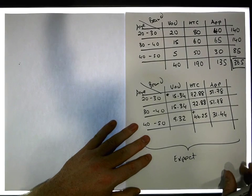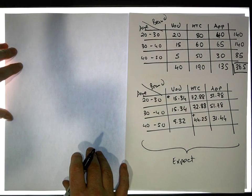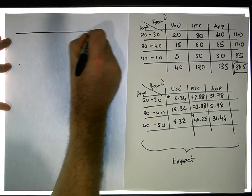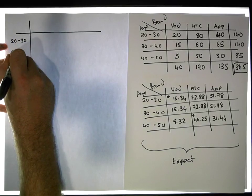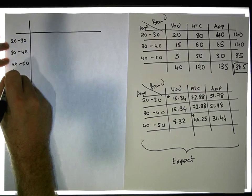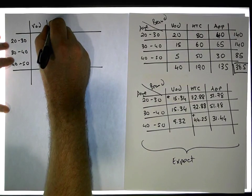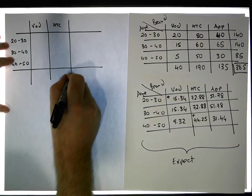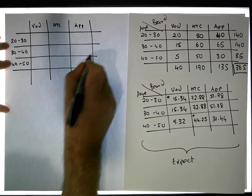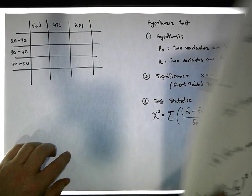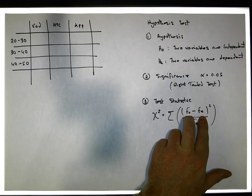To do this we need to create a new table. The table has the observed minus the expected, squared, for each cell. The age categories are 20–30, 30–40, and 40–50. The brands are Vodafone, HTC, and Apple. For each cell we'd like to calculate the quantity: observed minus expected, squared, divided by expected.